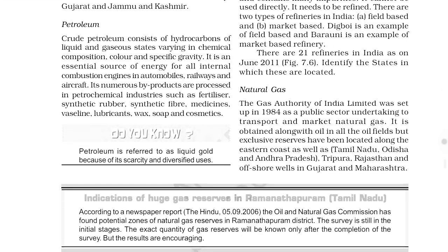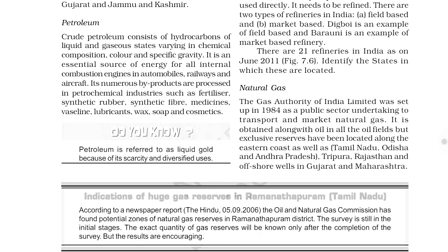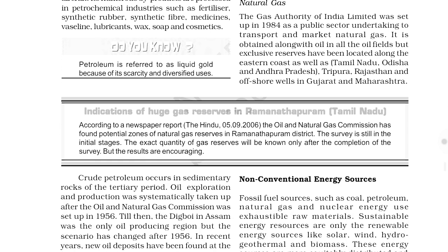Next we have natural gas. There are two forms: LPG and CNG. LPG is used for cooking and CNG is used for transport. Natural gas may occur with or without petroleum. Gas Authority of India Limited (GAIL) is the public sector undertaking associated with transport and marketing of natural gas, and was set up in 1984. Distribution: Tripura, Rajasthan, Odisha, Maharashtra, Gujarat, etc. If asked any question on natural gas, you will be asked to write a short note and these points are more than enough.